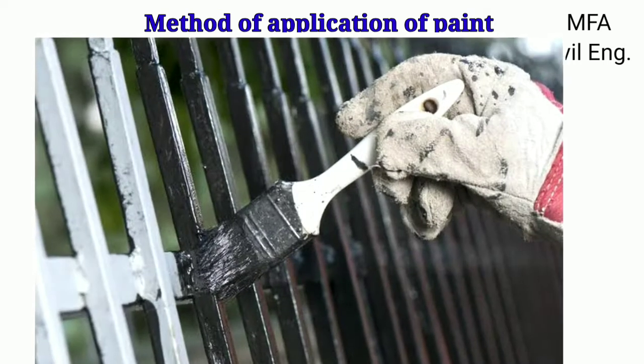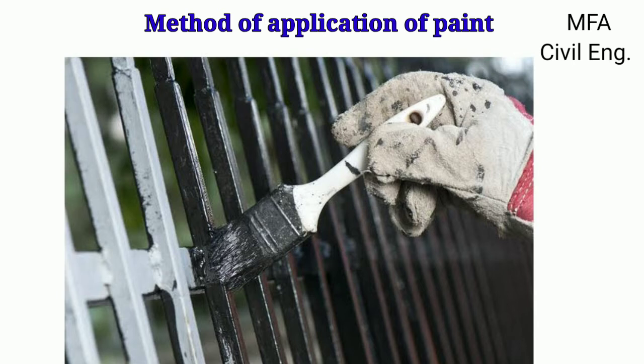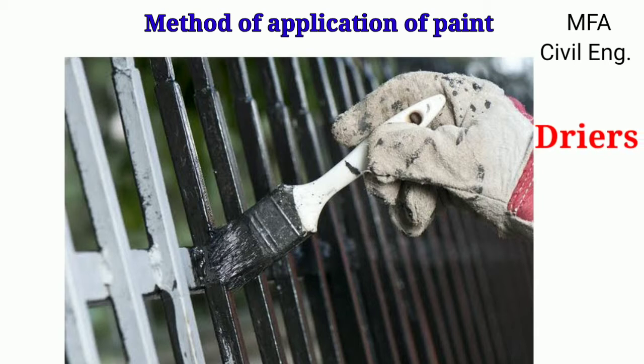When paint is applied to a metal surface by brushing or spraying, the thinner evaporates while the drying oil slowly oxidizes, forming a dry pigment film. A small amount of catalyst known as the dryer is also added to the paint to accelerate the drying process of the oil.